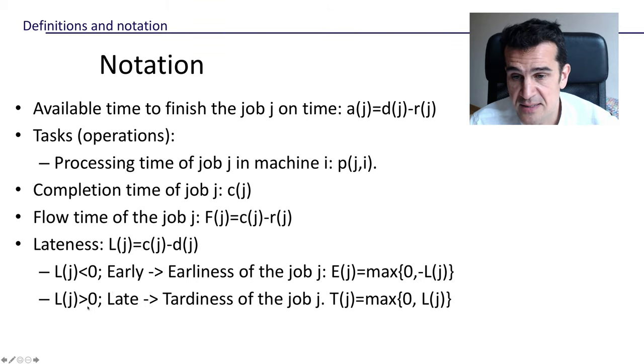And if the lateness is positive, that means that the completion time is greater than the due time. That means we were late, we didn't manage to finish by the due date. And then we can define the tardiness of the job, the job is late, and the tardiness would be the absolute value of the lateness in this case.